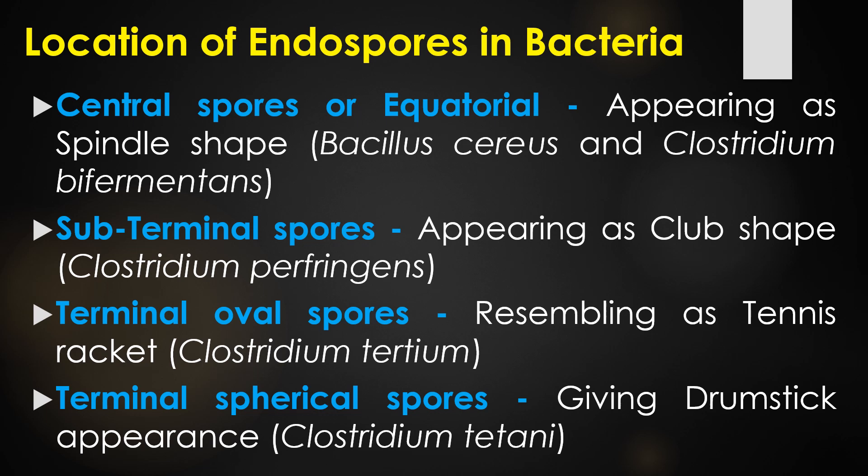The endospores are present in four different locations of the bacterial cell. The first is central or equatorial spores, as observed in Bacillus cereus and Clostridium bifermentans, appearing as a spindle shape. The second is subterminal spores, present in Clostridium perfringens, appearing as a club shape. The third is terminal oval spores, present in Clostridium tertium, resembling a tennis racket shape. The fourth location is terminal spherical spores, observed in Clostridium tetani, giving a drumstick appearance.